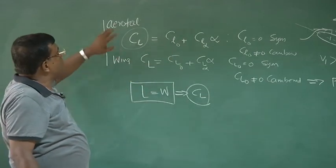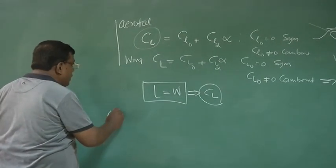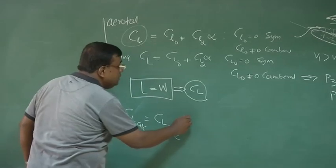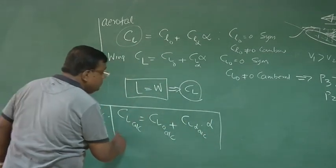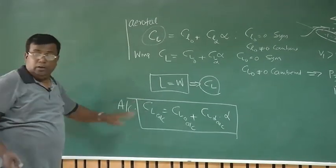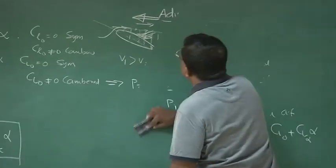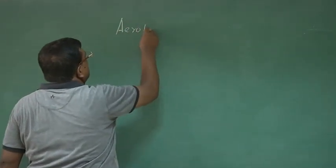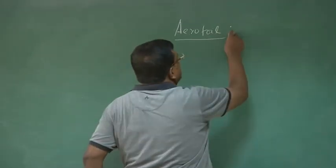I am talking about aerofoil and wing, and for the whole aircraft we will try to find CL_α of the aircraft. Please note the distinction: the first is aerofoil, the second is wing, and the third is aircraft. Now, what is the difference between aerofoil, wing, and aircraft? When I am talking about an aerofoil, it is basically a 2D concept — imagine the aerofoil shape having an infinite span.